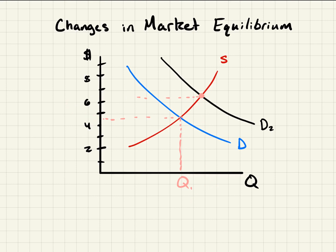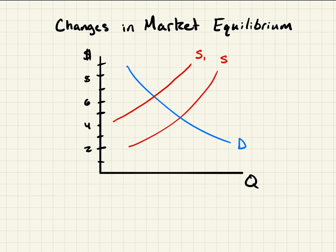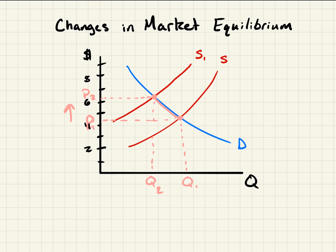Let's do another example. Instead of an increase in demand, let's say we have a decrease in supply. So we go to S2 here — a decrease in supply, going backwards. Our equilibrium quantity was here at Q1 and our equilibrium price was at P1. Now our equilibrium price is going to go up, but our equilibrium quantity demanded is going to go down. So we have a decrease in quantity demanded because the demand stayed the same. The supply decreased, so quantity demanded decreased.